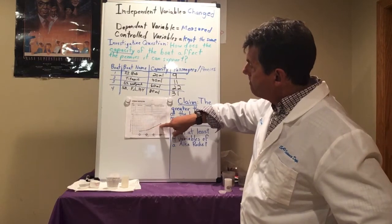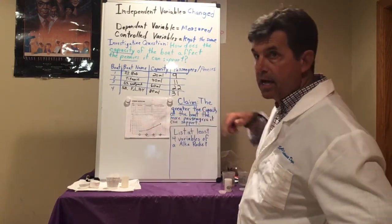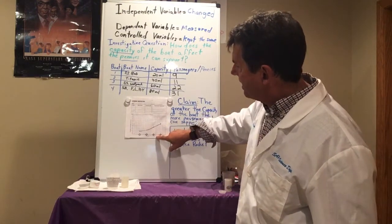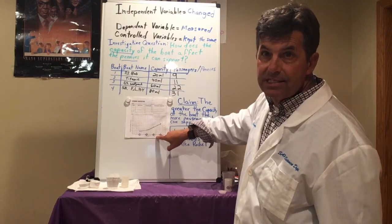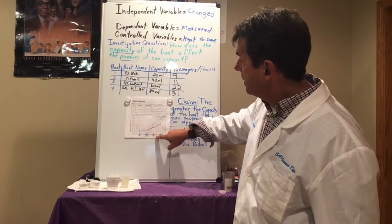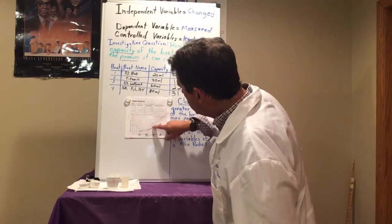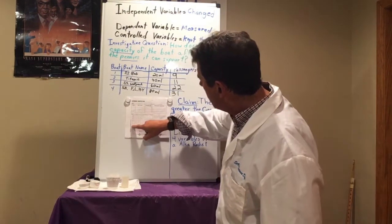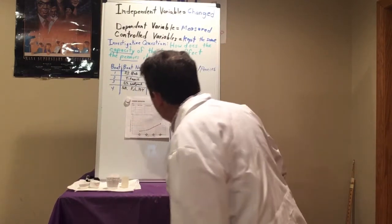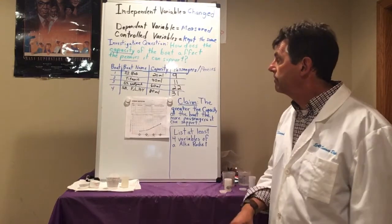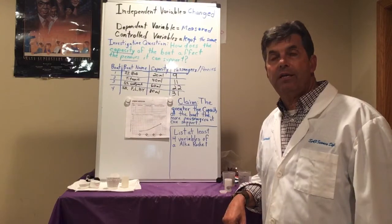You went ahead and connected the dots, and that would help us predict — like if we made a boat that was 70 milliliters capacity, about how many pennies it would support. We could say it would support right around 25 pennies. So we can use it as a predicting device.